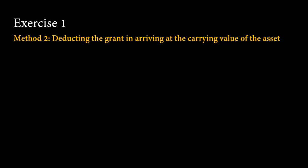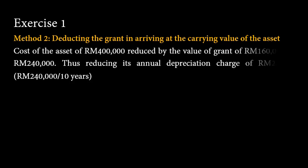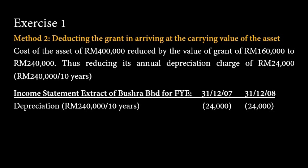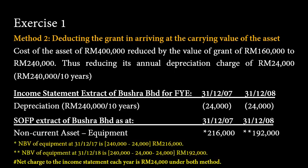For method 2, instead of recognizing the grant as deferred income, we directly deduct the amount from the cost of the asset. So the carrying amount will now be RM240,000 after deducting RM160,000 worth of grant. This will reduce the annual depreciation from RM40,000 to RM24,000. In the income statement, the relevant item will be depreciation at RM24,000. And in the statement of financial position, we will have only the asset at the carrying amount after deducting the grant and the accumulated depreciation.